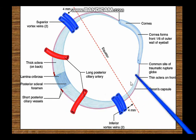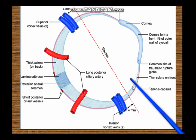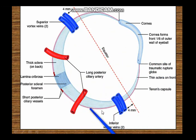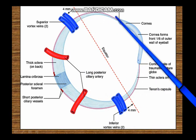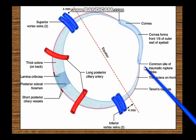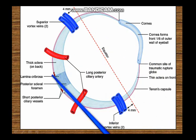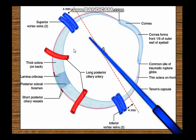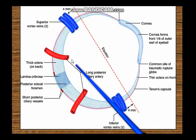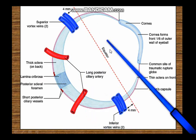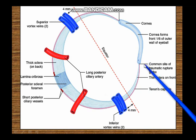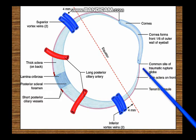The tenon's capsule — also called the bulbar fascia — is a loose fascial sheath that encloses the eyeball. The eyeball moves by the traction of the extraocular muscles within this fascia bulbi. The fascial coverings of the eyeball and the suspensory mechanism will be studied when we cover the orbit.